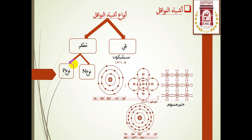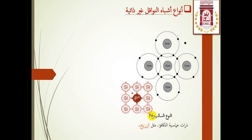بالنسبة للغير نقي أو المطعم أو المشوب أو الغير ذاتي، فهناك نوعان: نوع N ونوع P. في نوع N السالب يكون مطعما بذرة خماسية التكافؤ، بينما في النوع P الموجب يكون مطعما بذرة ثلاثية التكافؤ. بالنسبة إلى النوع N، يطعم بذرة خماسية التكافؤ أي لها خمسة إلكترونات في المدار الأخير.